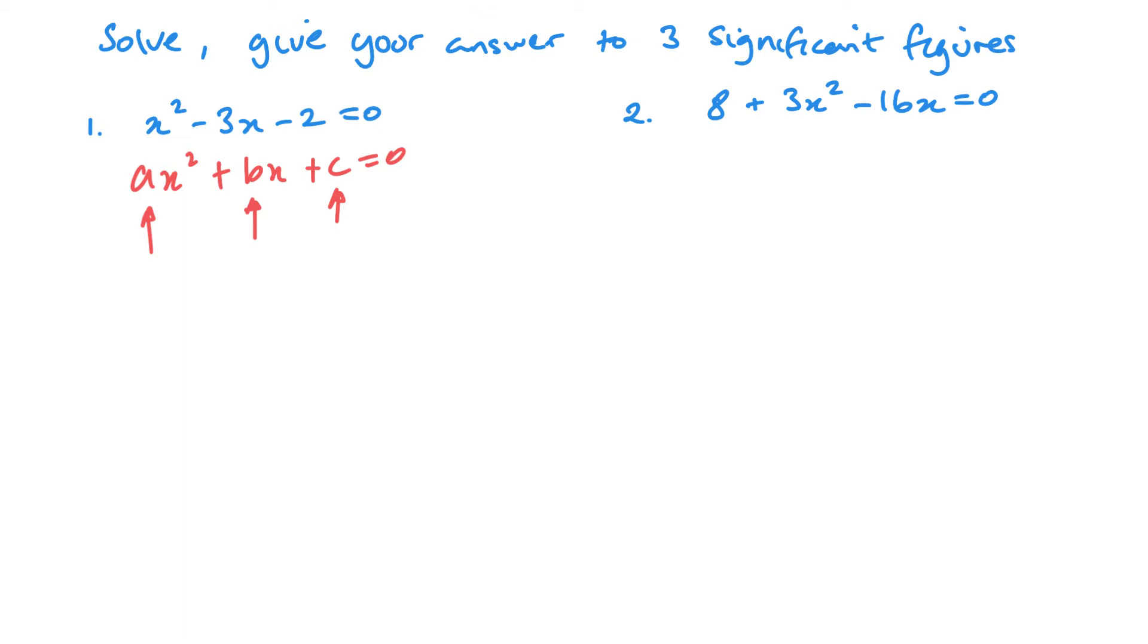So if I look at this first one here, my value of A would be 1, the number in front of x squared. My value of B would be minus 3, and my value of C would be minus 2. Now at this point it's just a matter of plugging these values straight into the formula. So we've got minus B, so minus minus 3, plus or minus square root. So B squared minus 4 times A times C.